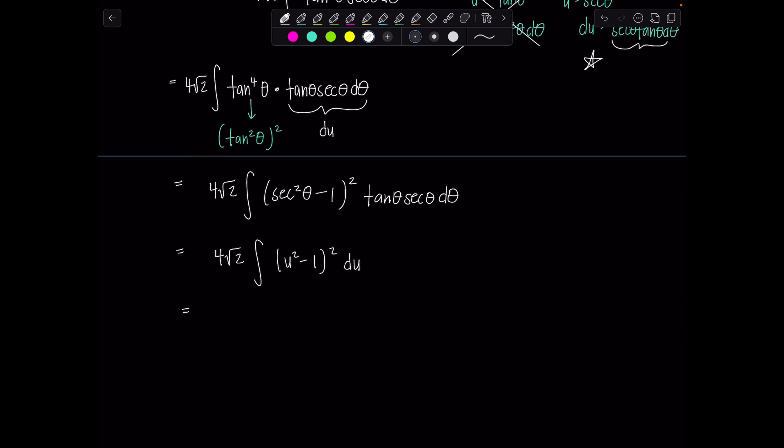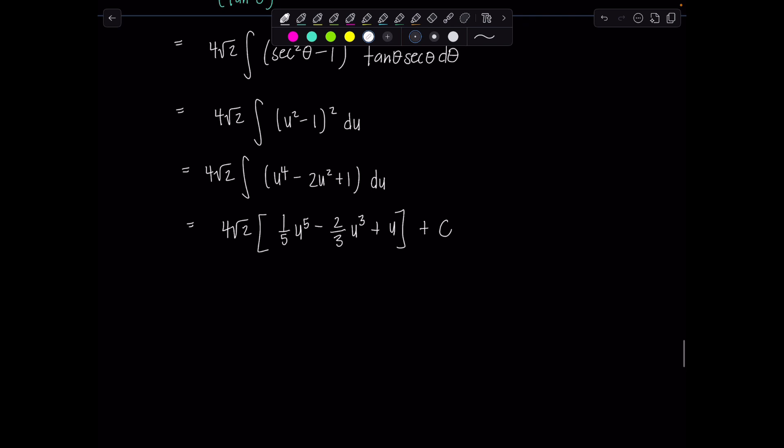Now from here, we just foil our little hearts out. U to the fourth minus two u squared plus one du. Now take the antiderivative term by term. So four rad two, one fifth u to the fifth minus two thirds u cubed plus u plus c. Now we have to go back, replace all of the u's with secant theta. So this is one fifth secant theta to the fifth minus two thirds secant theta cubed plus secant theta plus c.